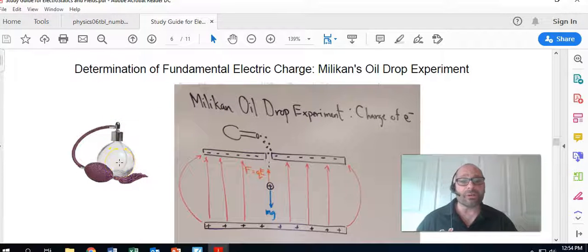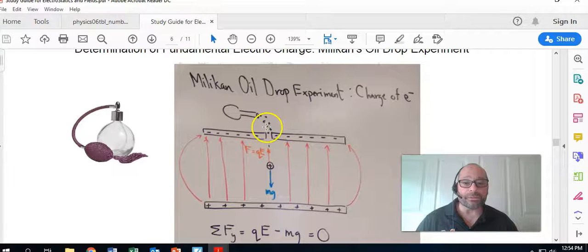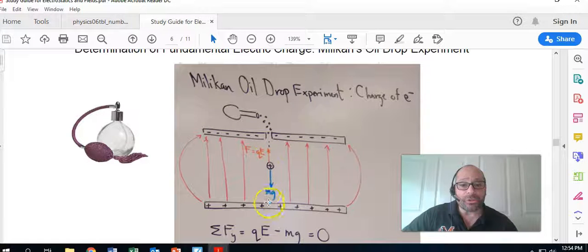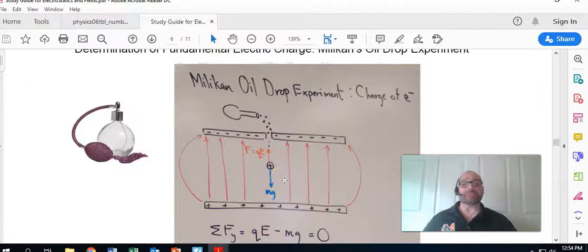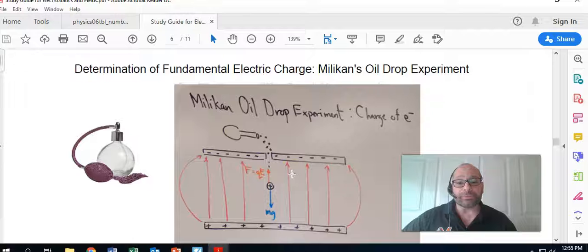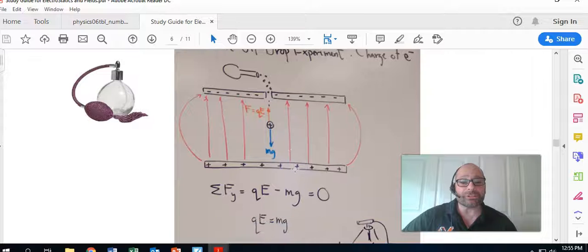out. So he charged some oil droplets, sprayed them through this atomizer, and these little droplets would fall through the hole. Since each oil droplet had its own weight, its mass times gravity, it would naturally fall through the hole and want to land on the bottom plate. But the ingenious part of this experiment was that they flipped the direction of the plate so that the field would point up, and we would be able to stop the fall by turning up the potential difference in such a way that